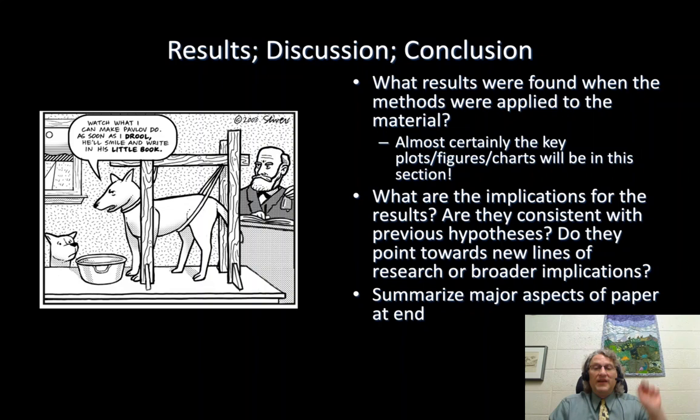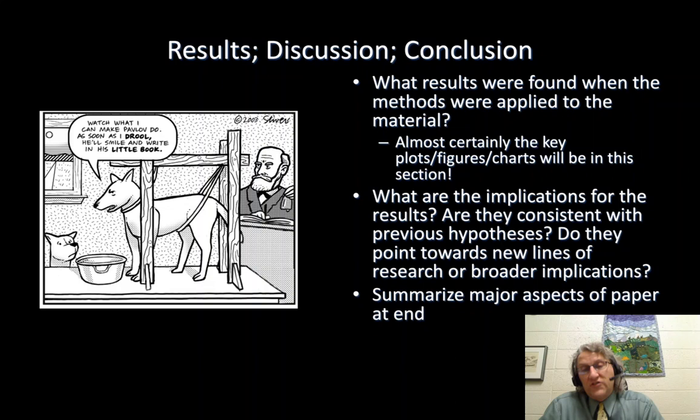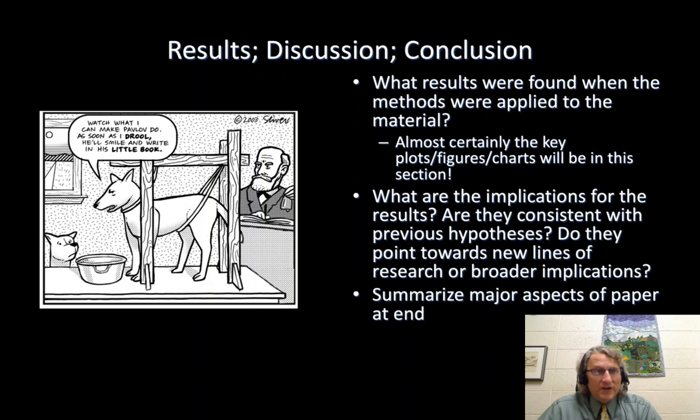And then, of course, afterwards there'll be other things. There's going to be a bibliography or references, so people can look up the related material. There might be appendices — nowadays, many of the appendices may be online. In fact, in some journals, the methods and materials are also online. I'm not a big fan of that; I think if you're going to have a paper that's a physical paper, you better have people have access right away to what your methods and materials are. But I'm not in charge of that.